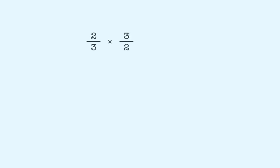Sometimes when two numbers are multiplied together, the product is one. Let's look at an example. Two-thirds times three-halves. When we multiply these two numbers, we get six-sixths, which reduces to one.